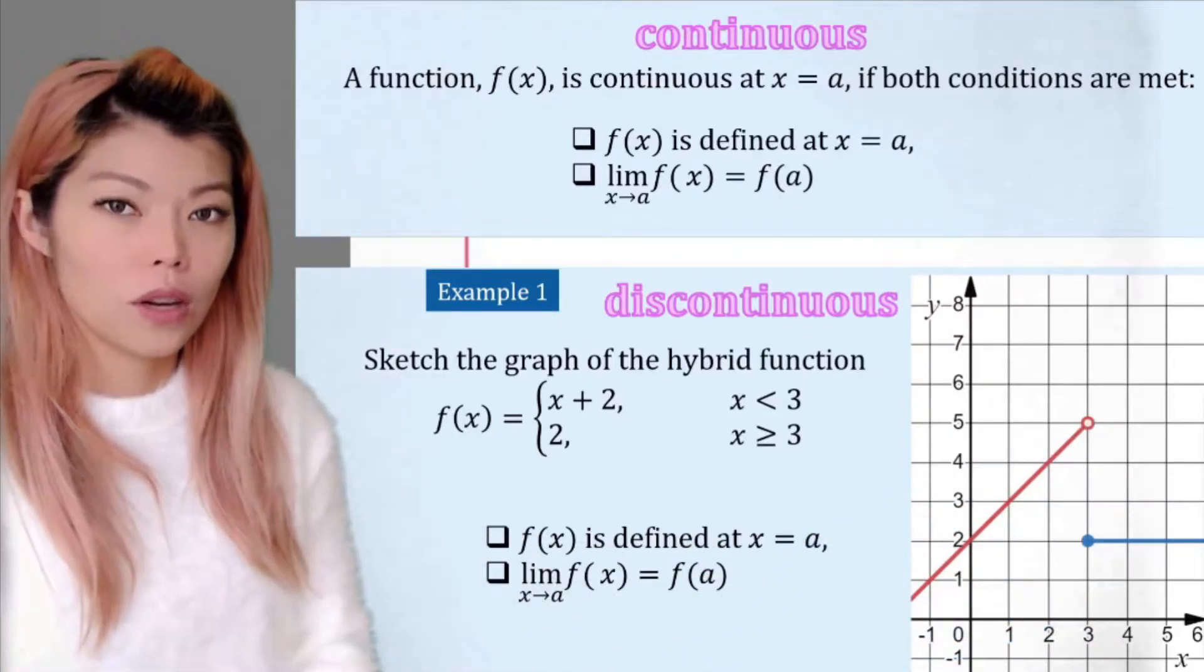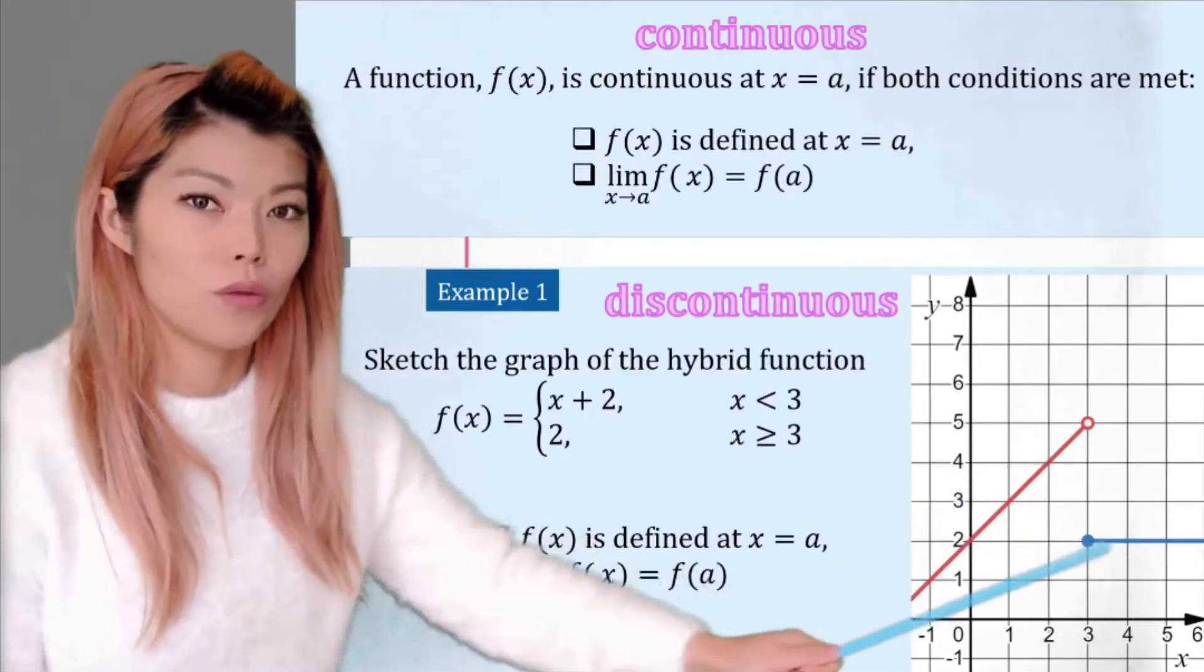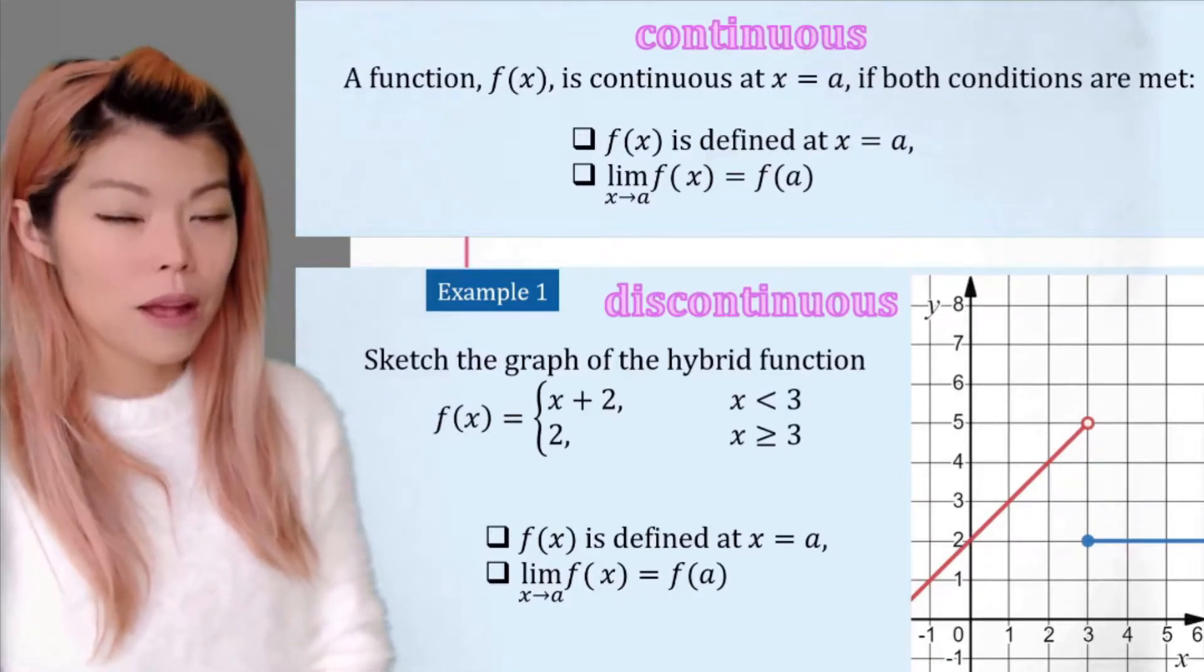But we can see that the limit doesn't exist. Remember in the previous video, what is the limit? The limit exists at a point if the left side and the right side approach the same value.